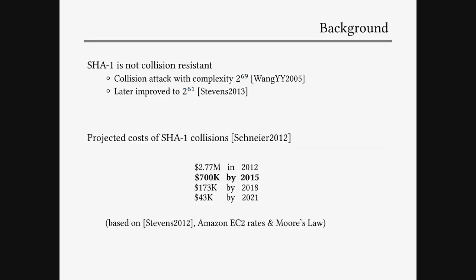It's well known that SHA-1 is not collision resistant. Already more than 10 years ago, in 2005, Wang et al. presented a collision attack with complexity 2 to the power of 69. This has only been later improved to about 2 to the power of 61 in 2013. That's still not really practical, so there are no collisions that have been found yet. Schneier basically has a blog post about projected costs of SHA-1 collisions, showing the declining costs to compute such a collision over the years due to Moore's law.